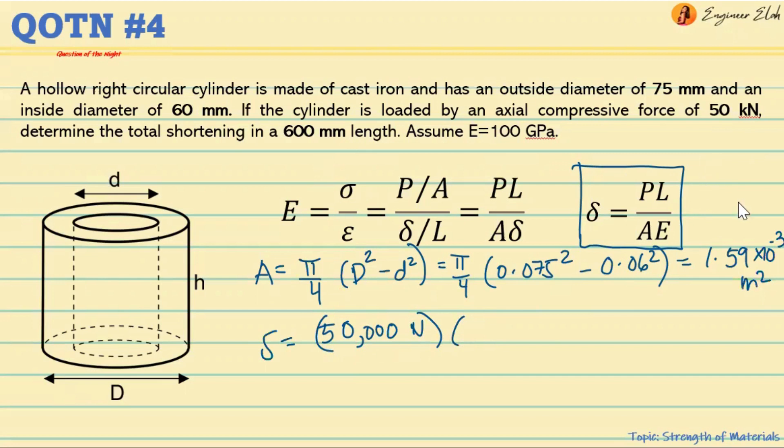So elongation equals P, 50 kilonewtons, which is 50,000 newtons, and the length is 600 millimeters. But since we are in meters, let's convert that to 0.6 meters. And the area we already calculated is 1.59 times 10 raised to negative 3 square meters.